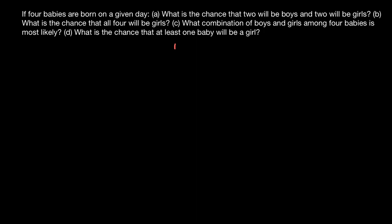We start with one in the first row — we call this row zero. In the second row, we have two ones on the side. In the third row, we again start with one, and the next number is a combination of the two numbers above it, so that's two, and we end with one. In the next row, we start with one, then the next number is a combination of the two above — three — and the next combination gives three again, and we end with one.